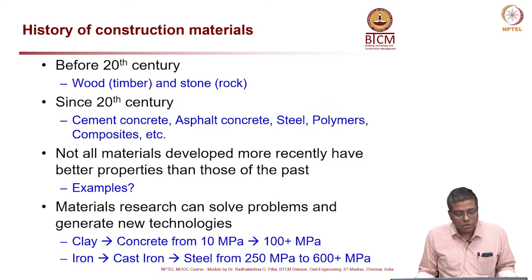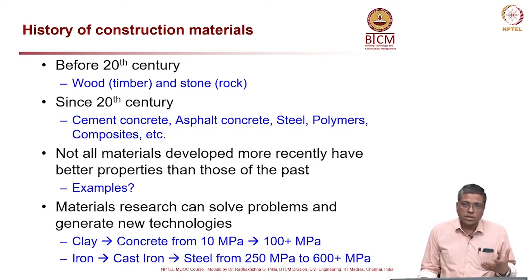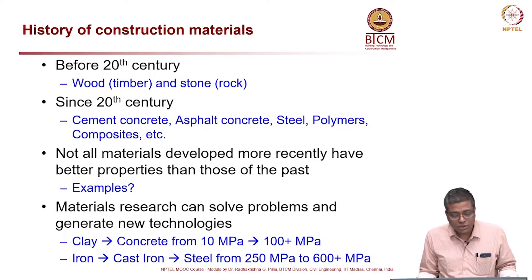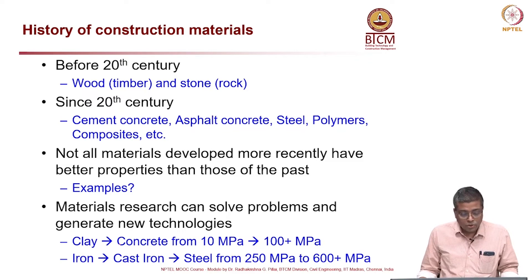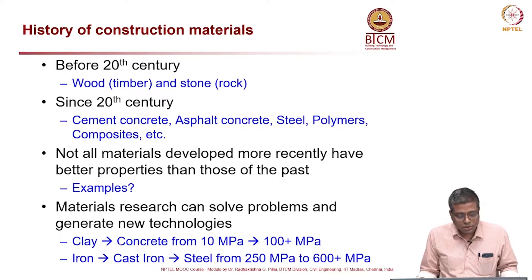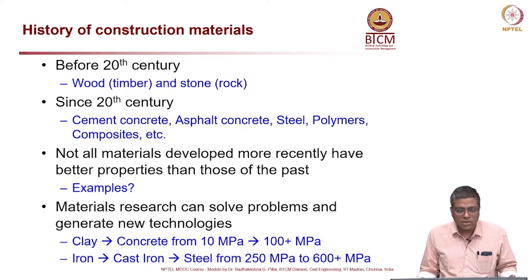Now let us go into the history of construction materials. We used to make houses and buildings using timber — even today in some places that is being practiced depending on climatic conditions and availability. We also used a lot of stone. In the 20th century onwards, we started using cement concrete, asphalt concrete, steel, polymers, composites, glass — various types of materials are in use in today's construction.